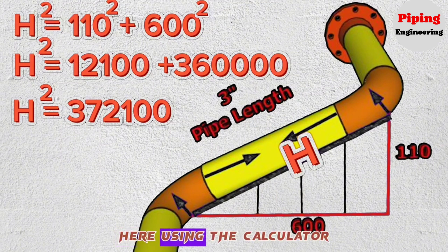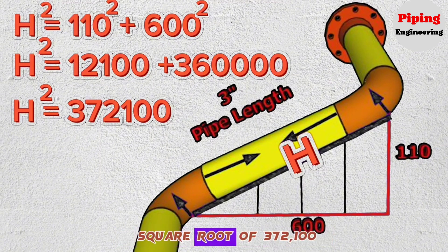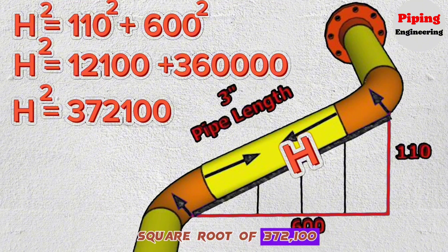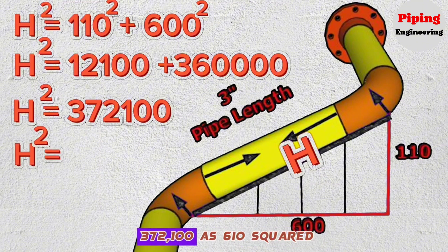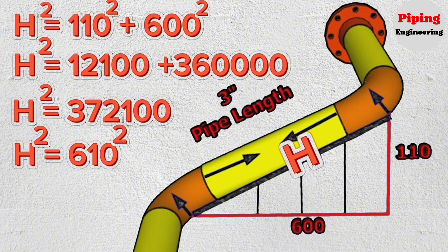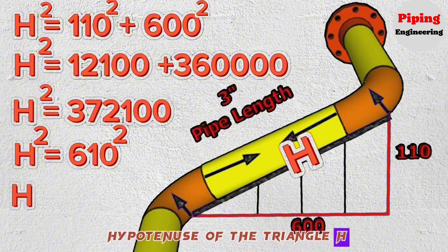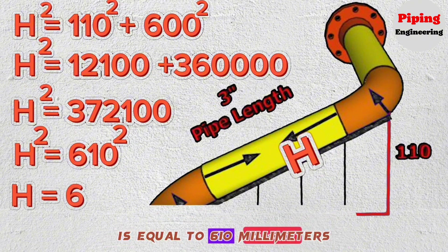The square of H is equal to 372,100. Here using the calculator we find that the square root of 372,100 is 610, or we can write 372,100 as 610 squared. As a result, the length of the hypotenuse of the triangle, H, is equal to 610 millimeters.